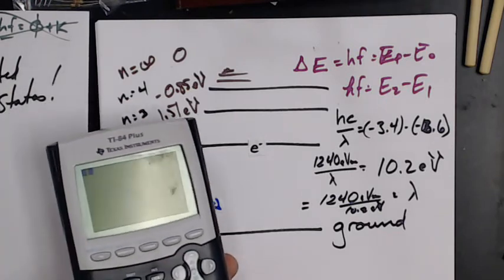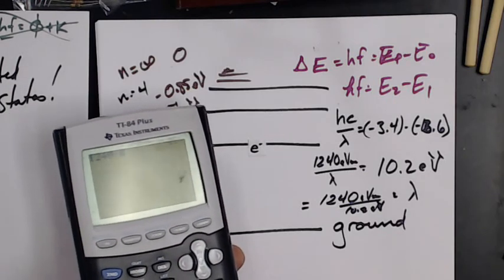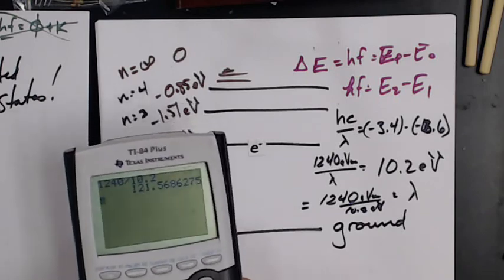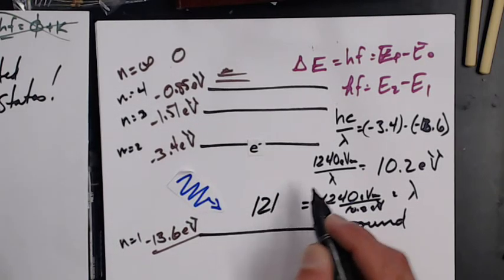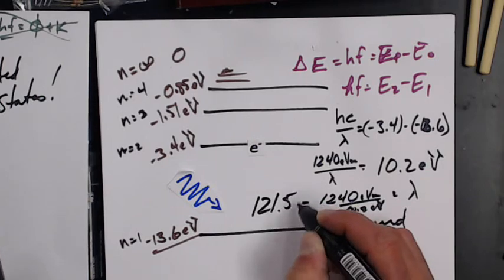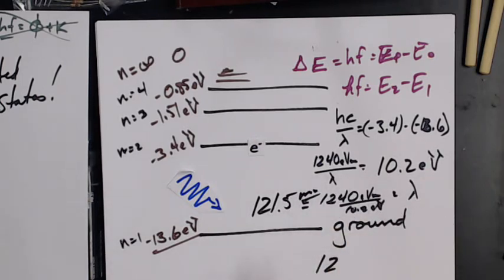I've got 1240 divided by 10.2, and that gives me 121.5 nanometers. That's pretty far into the UV.